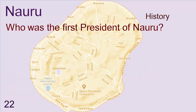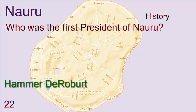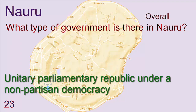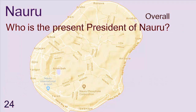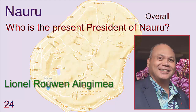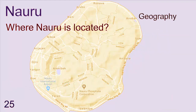Who was the first President of Nauru? Hammer DeRoburt. What type of government is there in Nauru? Unitary Parliamentary Republic under a non-partisan democracy. Who is the present President of Nauru? Lionel Rouwen Aingimea.